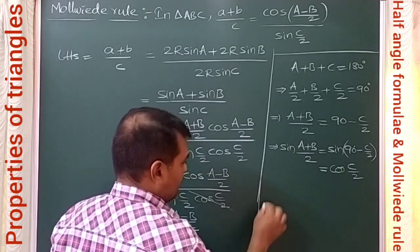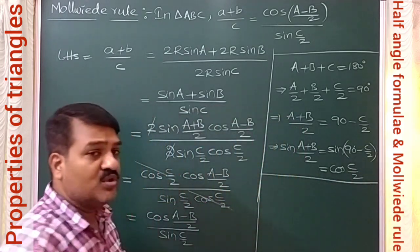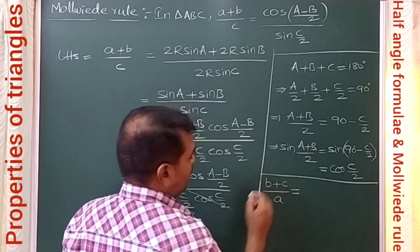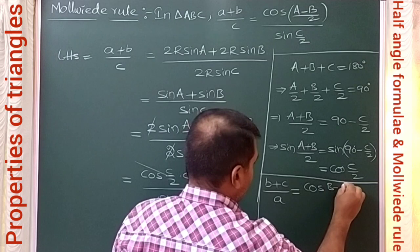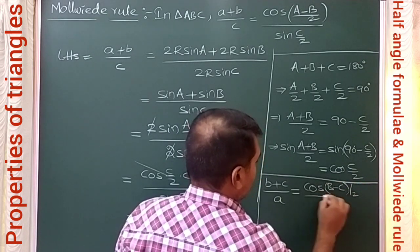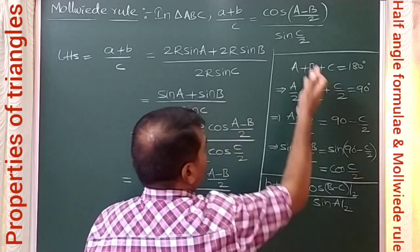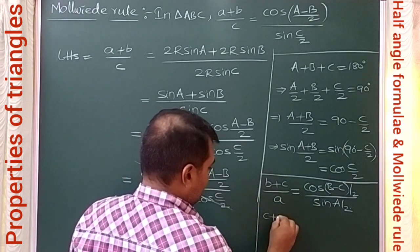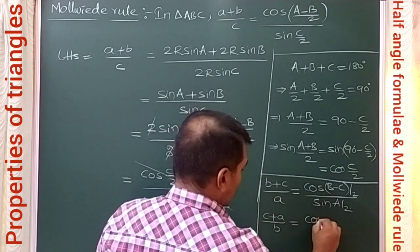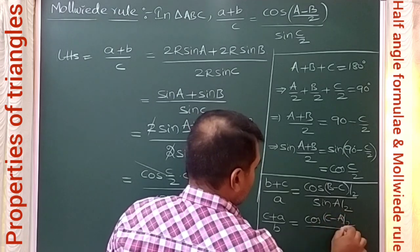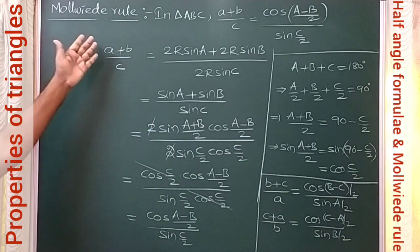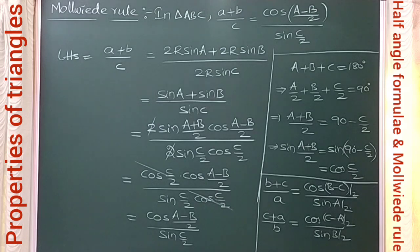Similarly, we can prove two more results by the same process: (b + c)/a = cos((B−C)/2) / sin(A/2), and (c + a)/b = cos((C−A)/2) / sin(B/2). These are all called the Napier's analogies (or the small weight rule for the triangle).